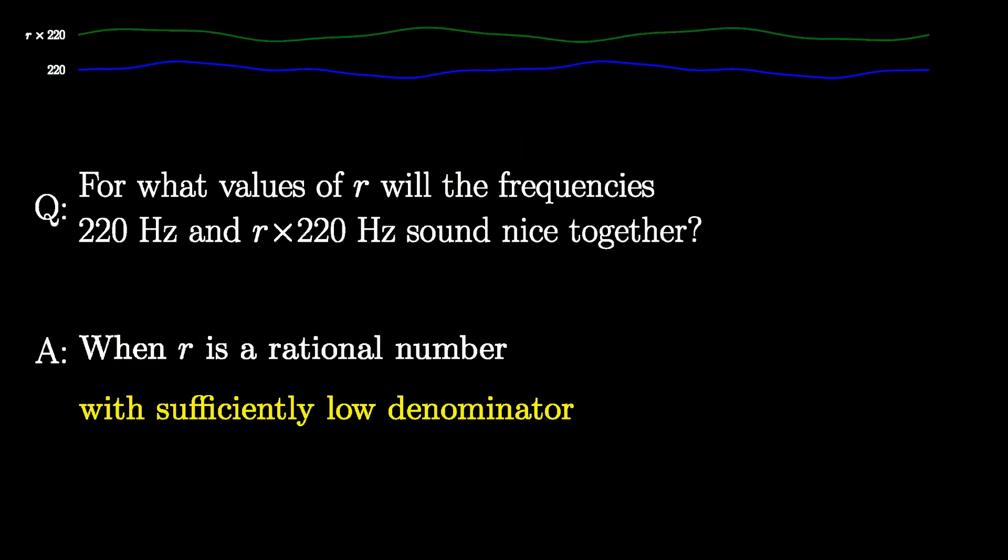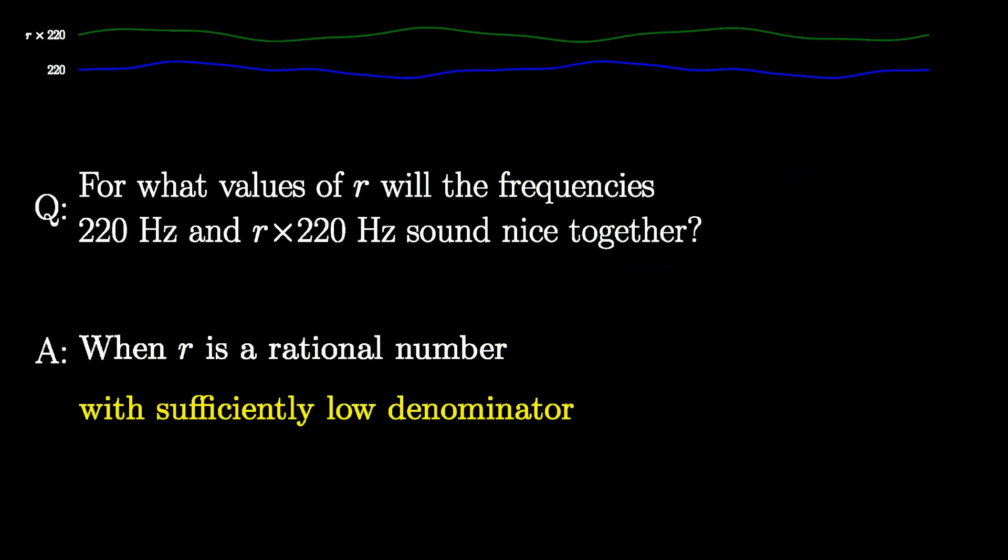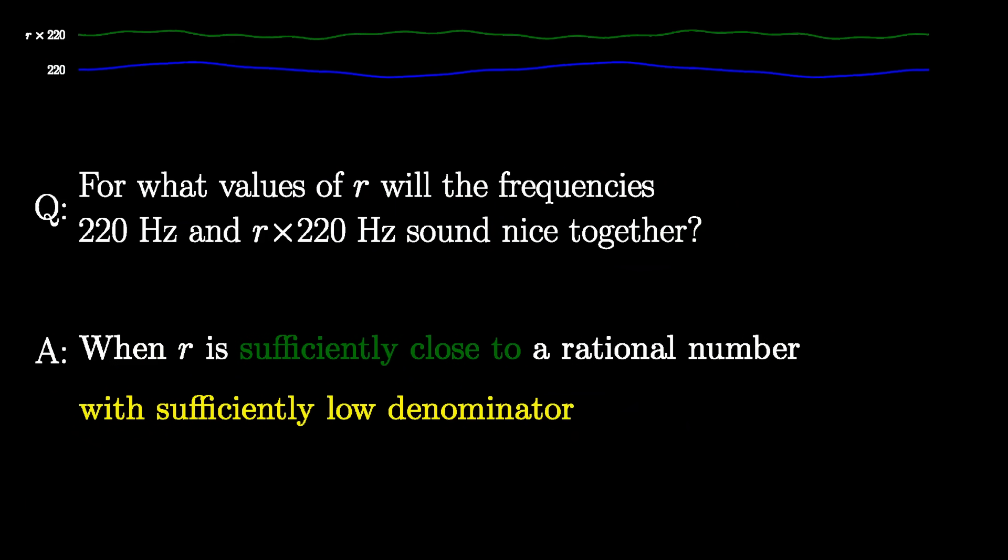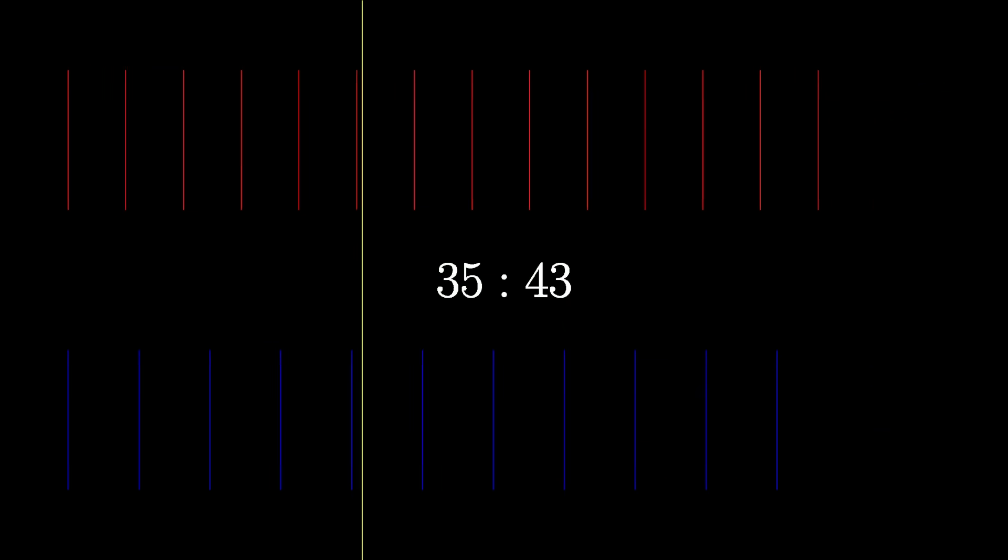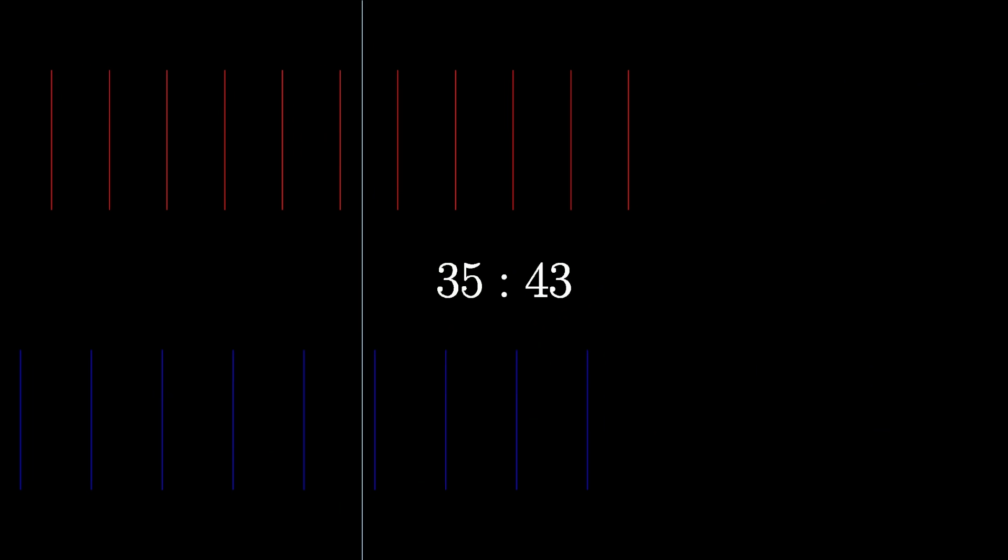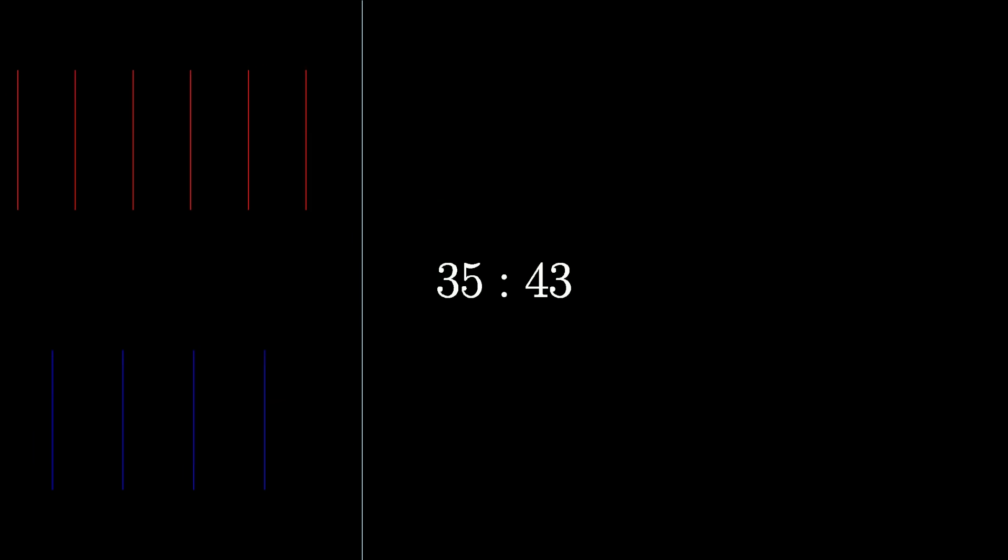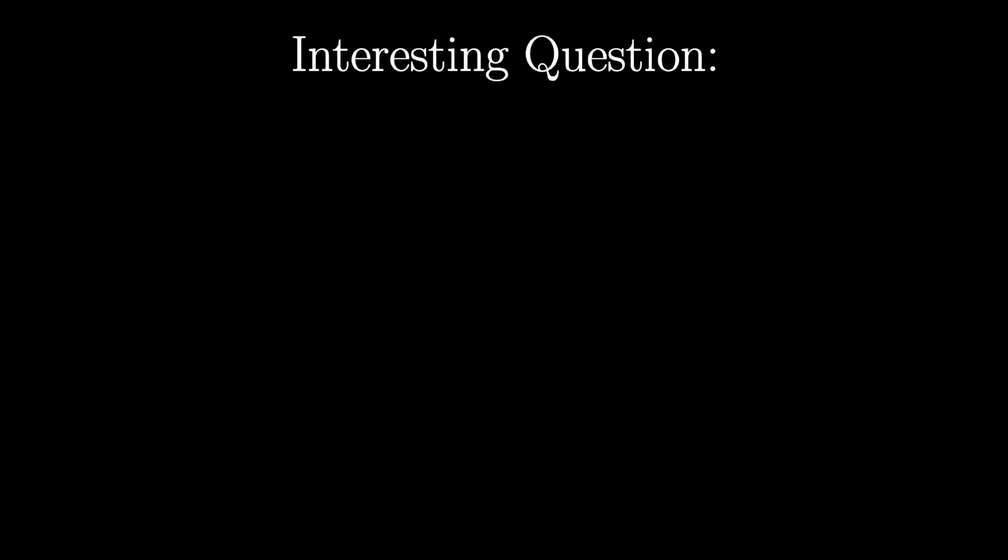So now you might say that a ratio r will produce a harmonious pair of notes if it is sufficiently close to a rational number with a sufficiently small denominator. How close depends on how discerning your ear is, and how small a denominator depends on the intricacy of harmonic patterns your ear has been trained to pick up on. After all, maybe someone with a particularly acute musical sense would be able to hear and find pleasure in the pattern resulting from more complicated fractions, like 23 over 21, or 35 over 43, as well as numbers closely approximating those fractions.